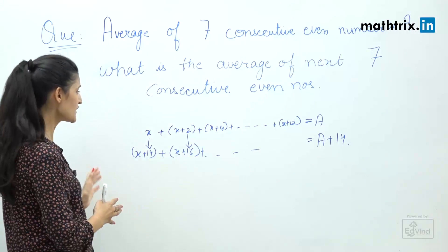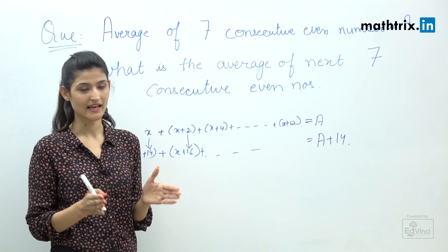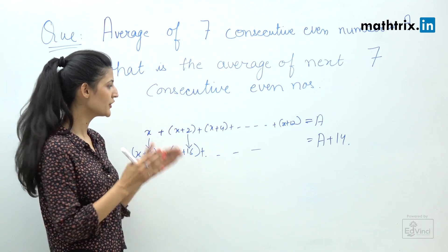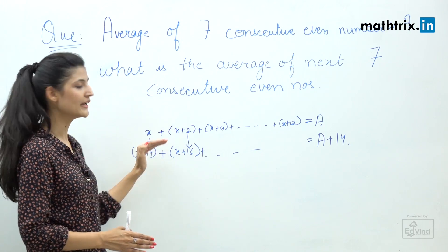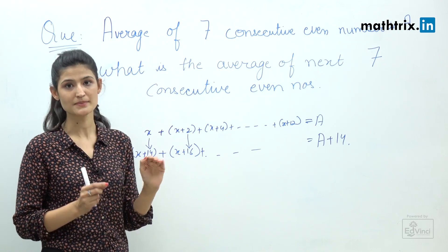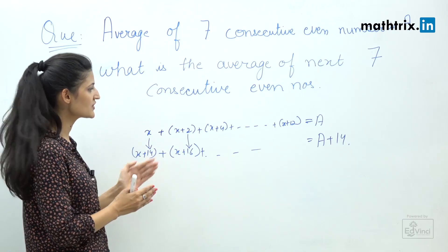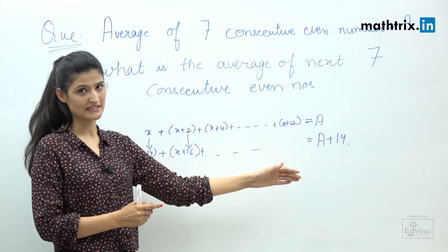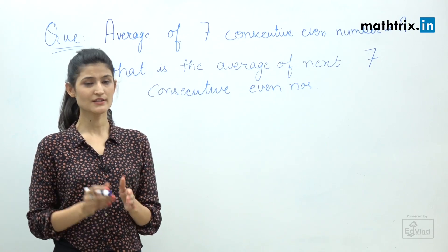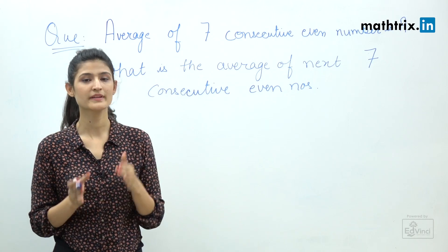The general rule is: if the average for a given set is a, and to make a new set each value is increased by d, then the new average equals a plus d. To make this simpler, let's assume a set of five values: p, q, r, s, t.